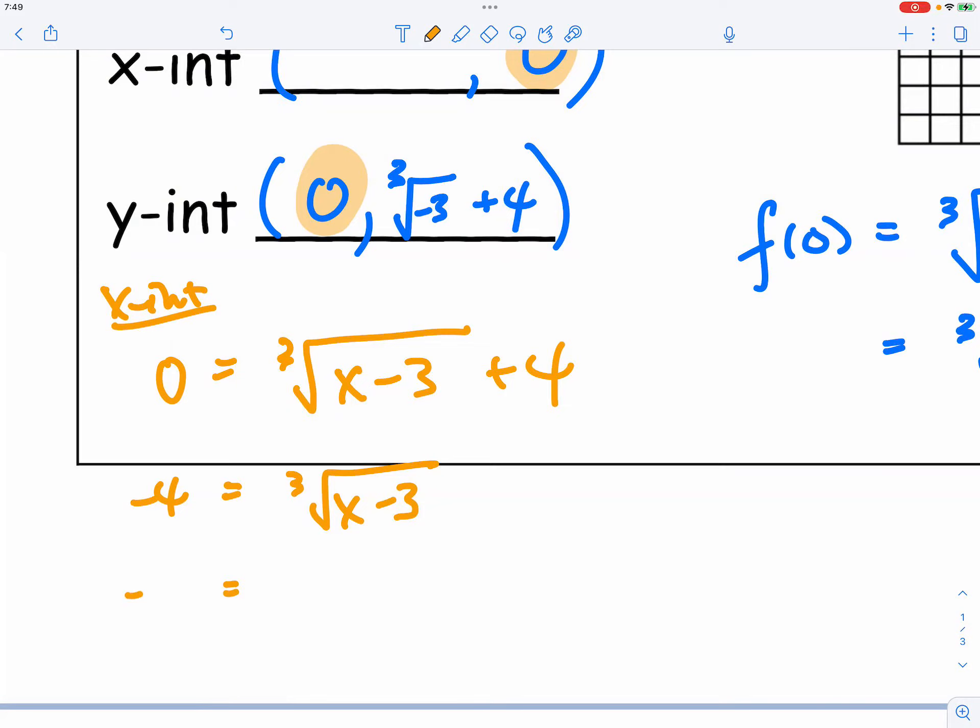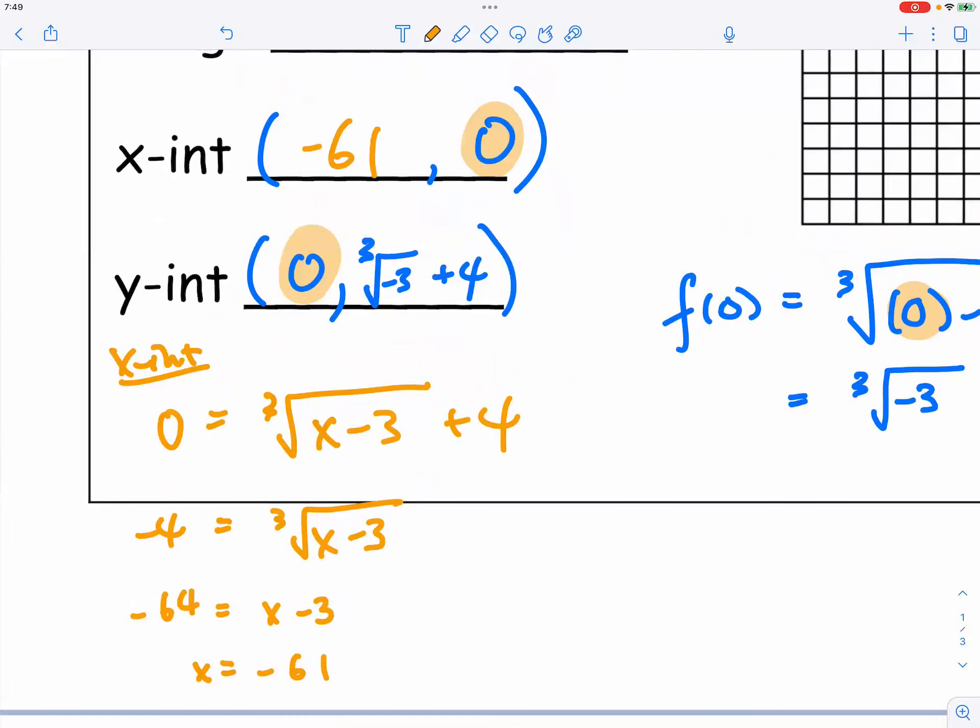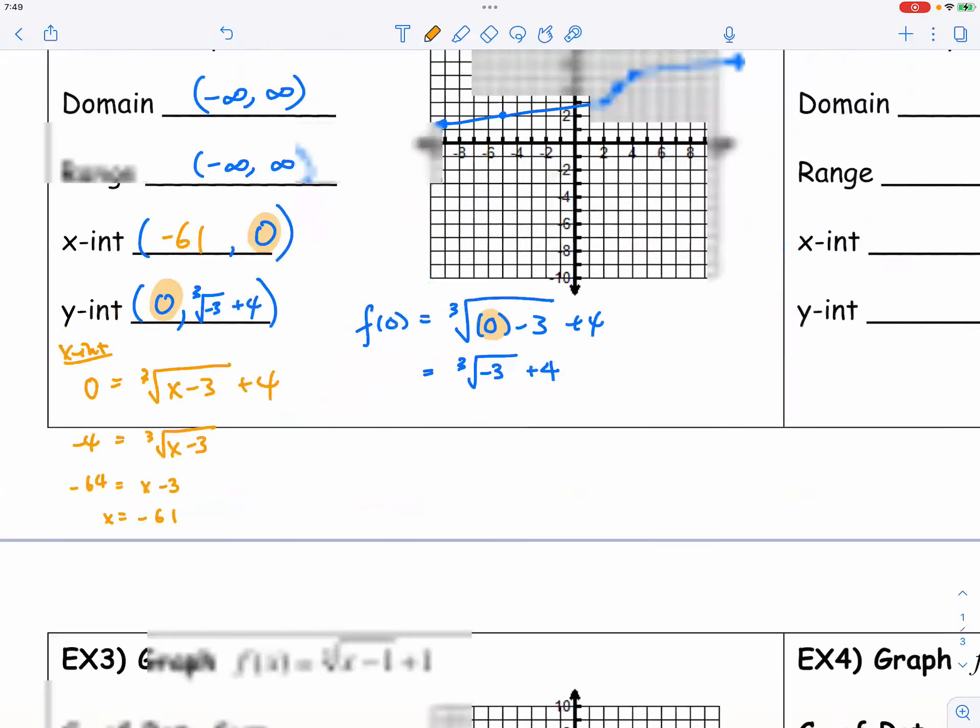What's negative 4 cubed? That will be negative 64. Remember last week I said you should know all those cubic numbers, 4 cubed. It's one of them. So x is equal to negative 61. You add 3 on both sides. So no wonder we couldn't see the x-intercept because it's so much further down to the left. It's negative 61, 0.